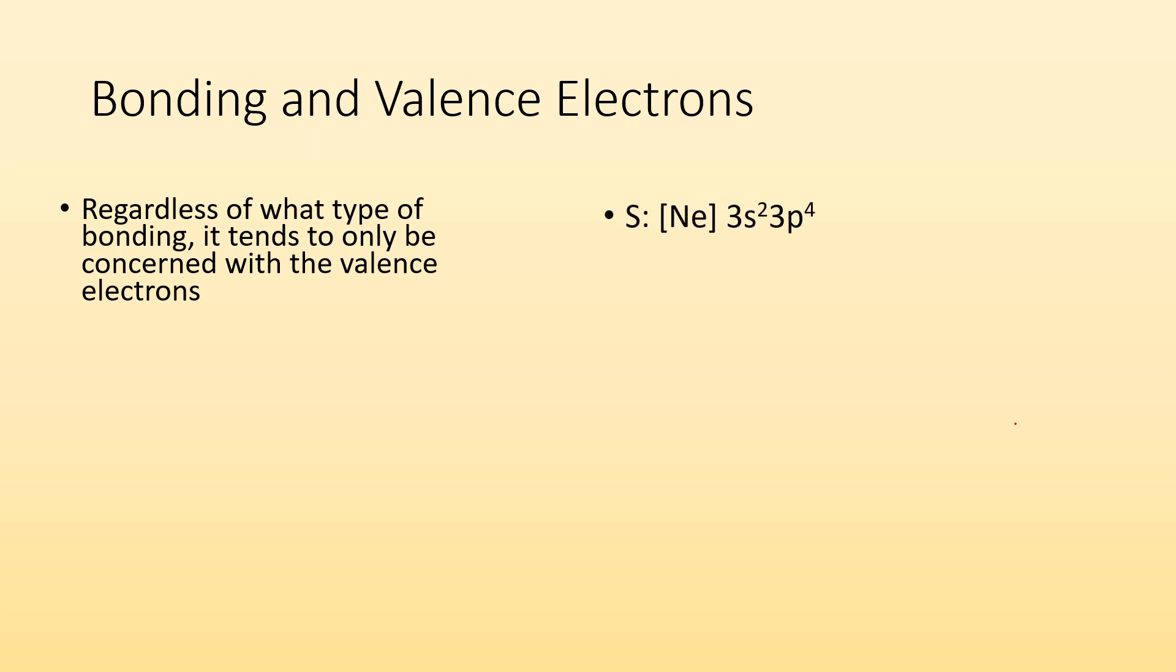So if I'm looking at sulfur, we have these core electrons that have the same configuration as neon, and then we have these third energy level electrons. These are the valence electrons. These are the ones that are interacting and bonding with other atoms.